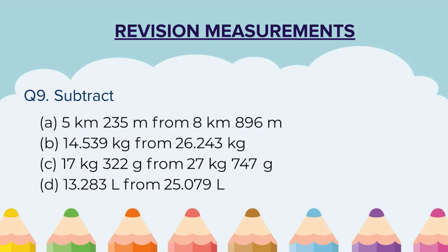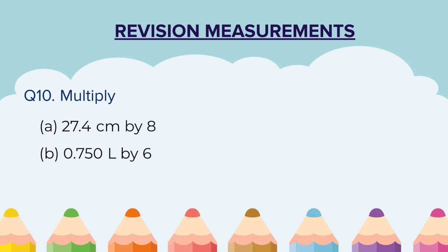Question 9: Subtract 5 kilometers 35 meters from 8 kilometers 896 meters. B part: Subtract 14.539 kg from 26.243 kg. C part: Subtract 17 kg 322 grams from 27 kg 747 grams. D part: Subtract 13.283 liters from 25.079 liters.